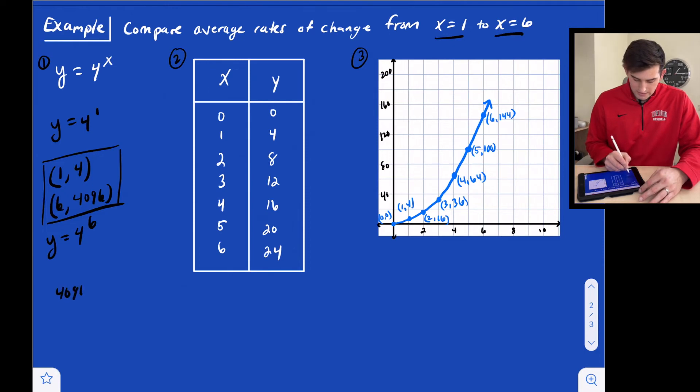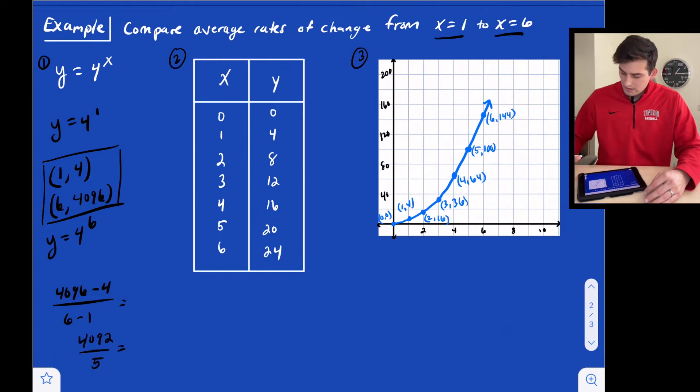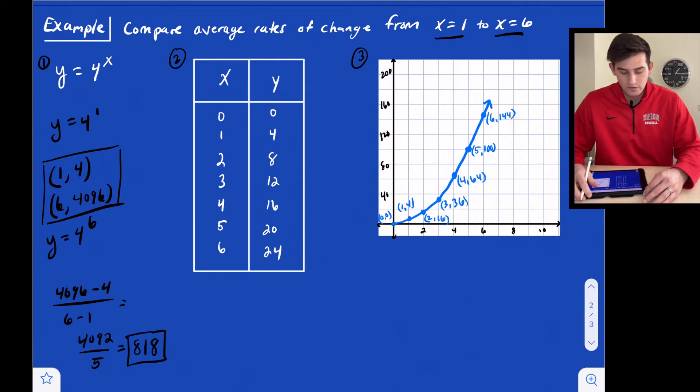Let's do 4,096 minus 4 divided by 6 minus 1. So we get 4,092 divided by 5. We can do 4,092 divided by 5, and we get approximately 818. So our average rate of change is 818.